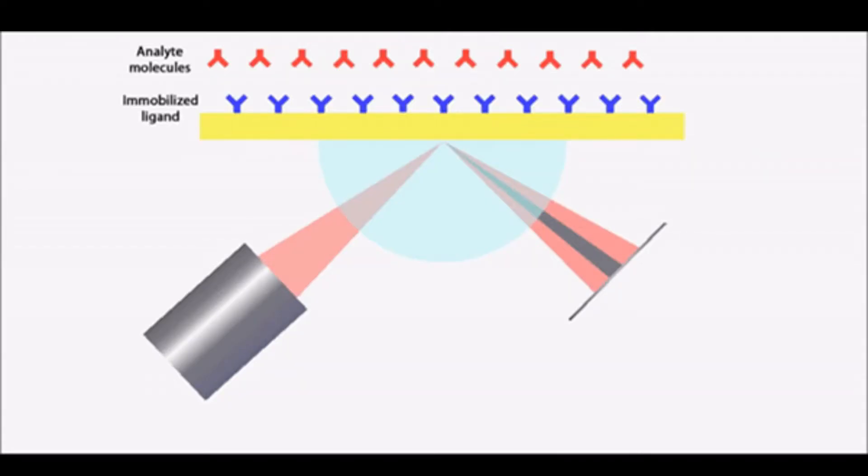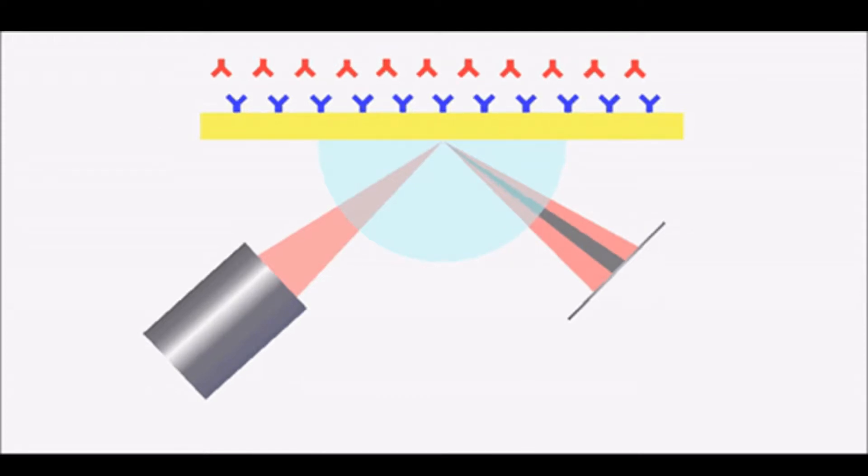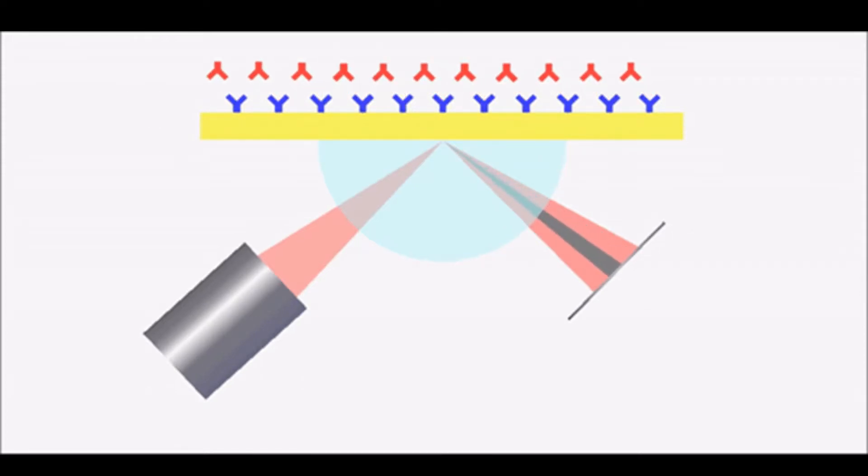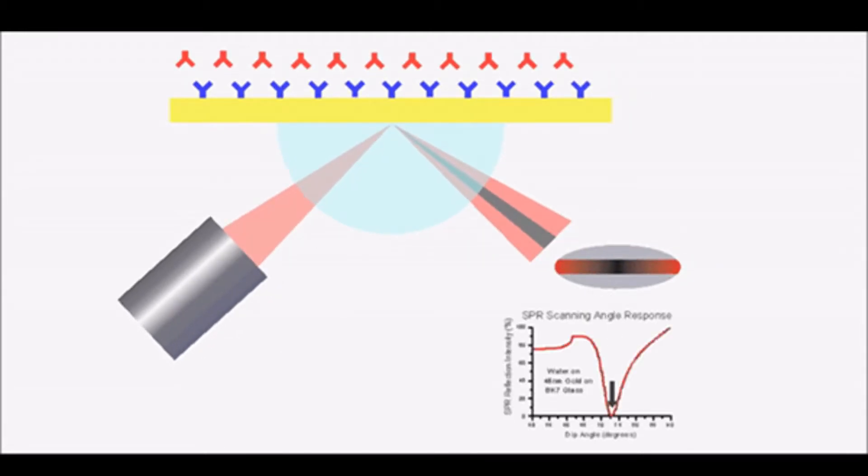On the biology side, biomolecules immobilized on surface of gold film act as molecular probes. When target molecules react with immobilized probe, this affects optical properties. So we observe a shift in SPR curve which we discussed before. Using this, we can extract information about the sensor surface.